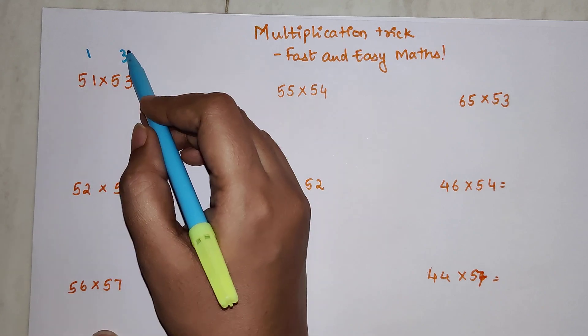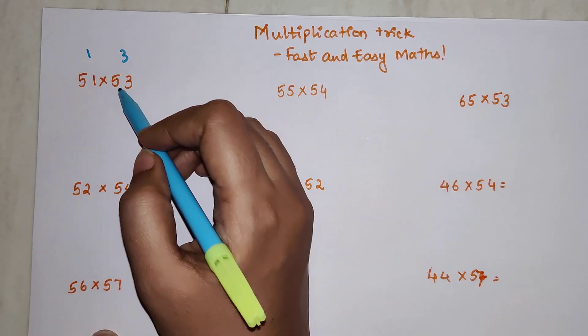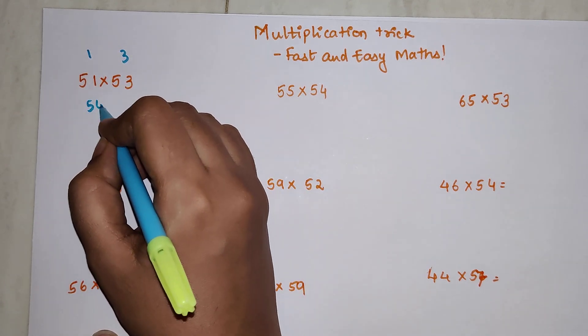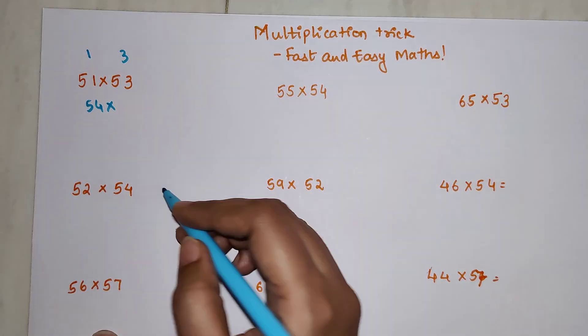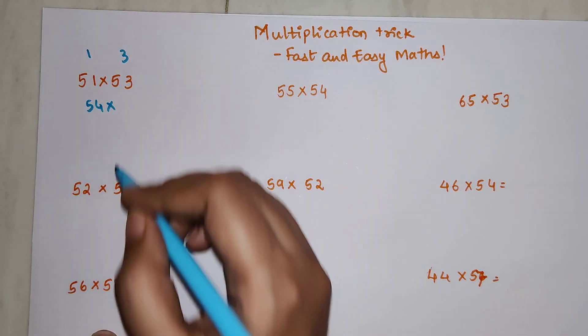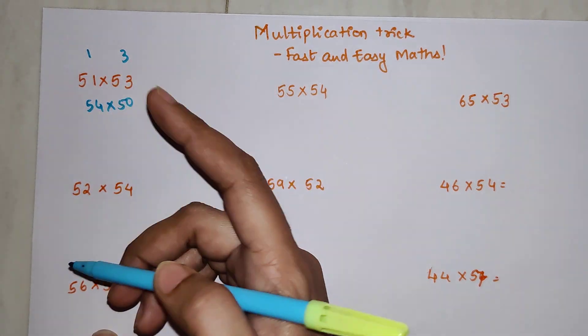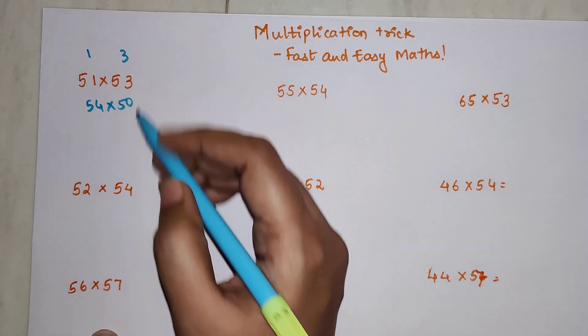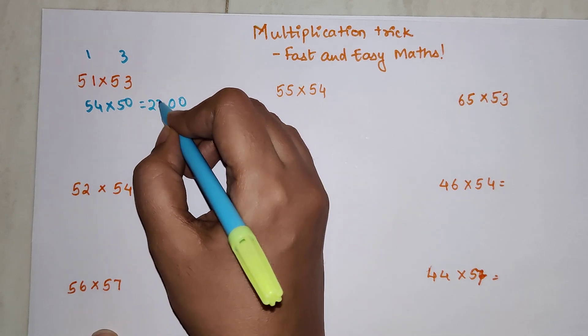The next step is to cross add, meaning you add diagonally. Either add 51 and 3, or add 53 and 1. Both will get you 54. Then you multiply by 50, because the difference was taken from 50 as the benchmark.